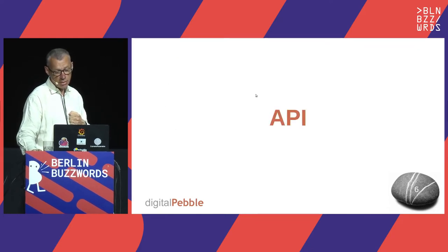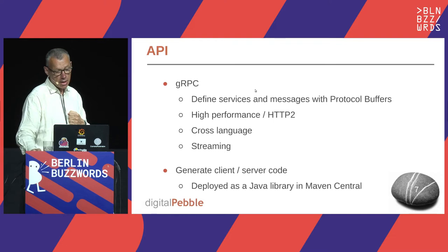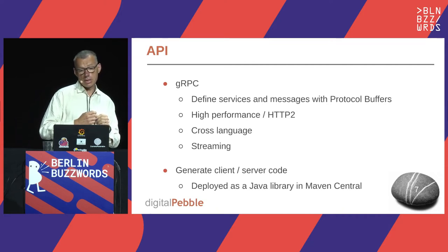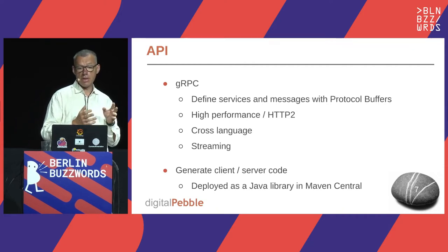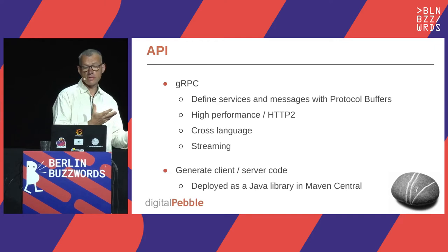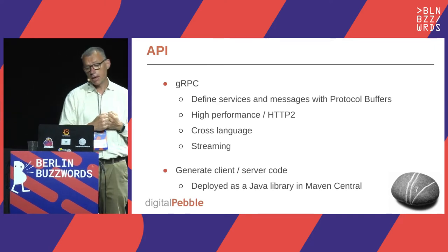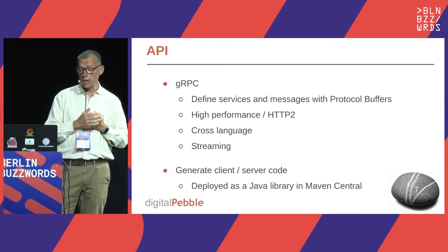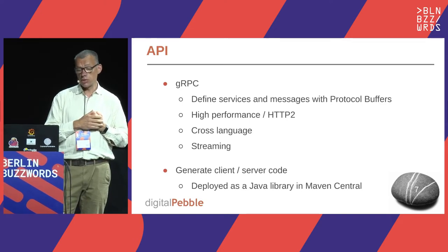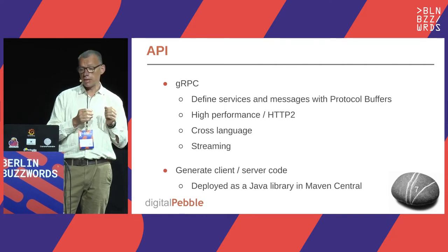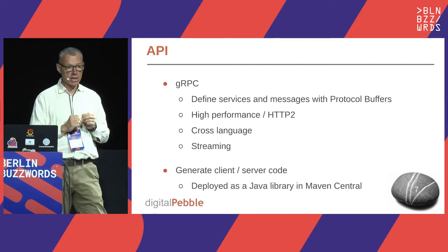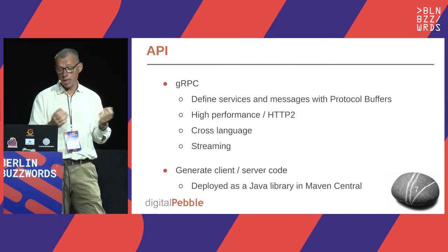The API is defined using gRPC. With gRPC, you define the services and the messages using protocol buffers. gRPC is high performance, uses HTTP/2, and is cross-language — from that neutral protocol buffer definition, you can generate code in various programming languages.